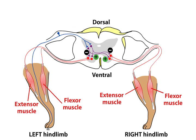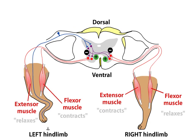Flexion of the stimulated limb is therefore accompanied by an opposite reaction in the contralateral limb. That is, the extensor muscles are excited, while flexor muscles are inhibited.